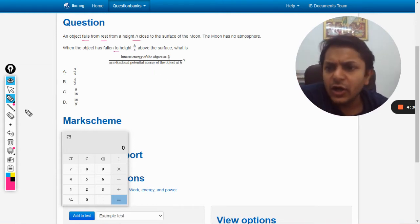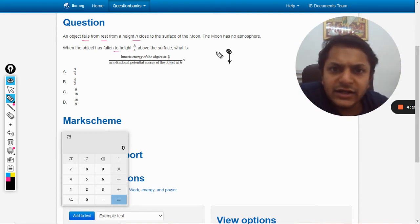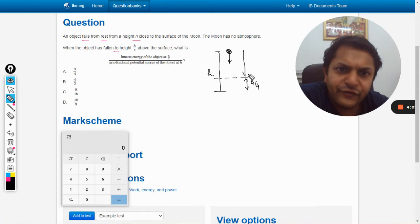According to the question, there is this body which is basically falling down. Initially it was at the height of h, and later it has reached this point which is at h by 4 height. So the body has fallen by 3h by 4.